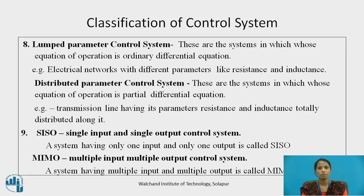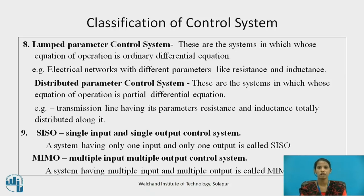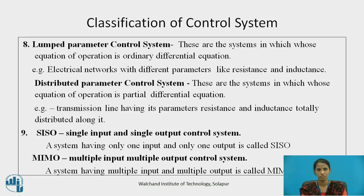Lumped parameter control system: a system whose equation of operation is an ordinary differential equation. For example, electrical networks with parameters like resistance and inductance. Distributed parameter control system: systems whose equation of operation is a partial differential equation. For example, a transmission line having its parameters — resistance and inductance — distributed along its entire length.